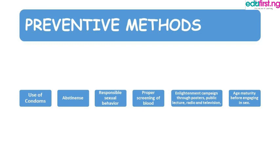The preventive methods of sexually transmitted infections are: number one, use of condoms; number two, abstinence — meaning you totally abstain from sexual intercourse; number three, responsible sexual behavior — meaning you remain faithful to your partner; and number four, proper screening of blood, ensuring that a person is screened and does not have any trace of sexually transmitted infections.